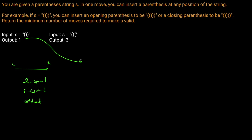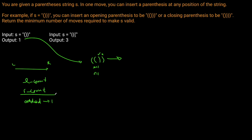With a right parenthesis, we always know if it's valid or not. For example, if left count is one and right count is also one, then encountering another right parenthesis means there's no left parenthesis to close it. In that case, we need to add a left parenthesis. So every time we encounter a right parenthesis and right count is not strictly less than left count, we must add a parenthesis — and we don't count it as part of the right count.